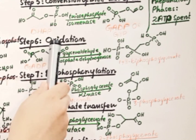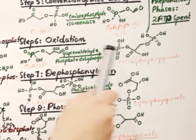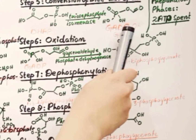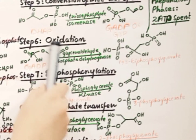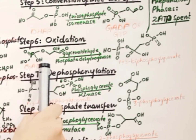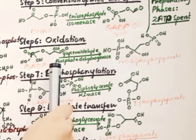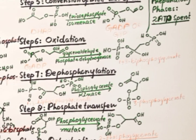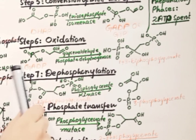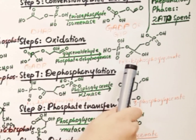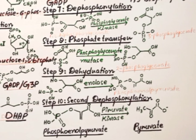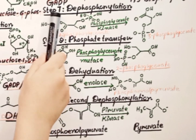In step 6, oxidation, we are going to oxidize G3P (glyceraldehyde-3-phosphate). We have two molecules of G3P, and with the help of glyceraldehyde-phosphate dehydrogenase enzyme, each G3P will convert into 1,3-bisphosphoglycerate.